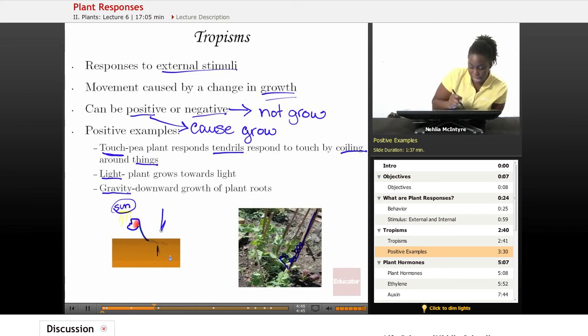And then the last positive tropism is gravity. Gravity is that invisible force that keeps us all here on Earth. The tropism for gravity would be just seeing that the roots of a plant grow down from the plant. So all of these things, touch, light, and gravity would be examples of tropism.